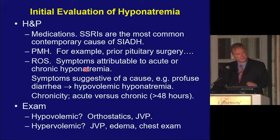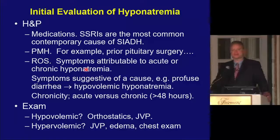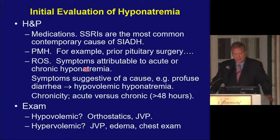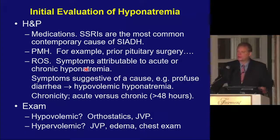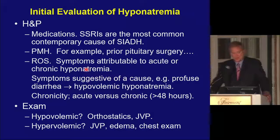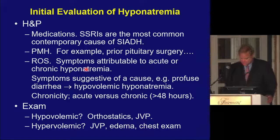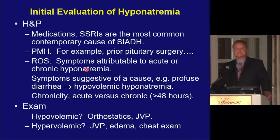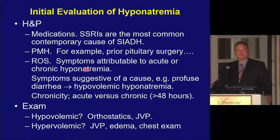Is this an acute process or a chronic process? The physical exam is very important. Is this patient hypovolemic? Are they orthostatic — do they have orthostatic changes in heart rate and blood pressure? Do they have a lower than expected JVP? Are they hypervolemic — do they have a raised JVP, peripheral edema, or rales on chest X-ray? However, a key lesson is that the physical exam is not always that helpful in determining if people actually have hypovolemic hyponatremia, and there's a classic paper that shows that.